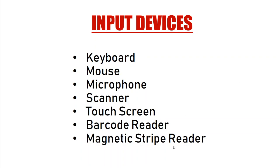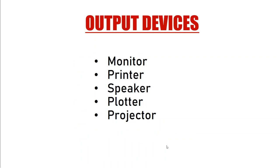Output devices include the monitor, printer, speaker, plotter, and projector. The plotter is used for plotting figures for engineering purposes on a very large sheet. A projector projects the monitor's display onto a large surface so it is visible to everyone. That is all about the input devices and output devices.